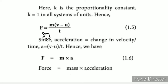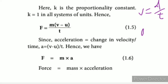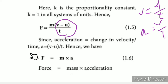Then F equals m into (v minus u) divided by t. The quantity (v minus u) divided by t is the change in velocity over time, which is acceleration. So F equals m into a.